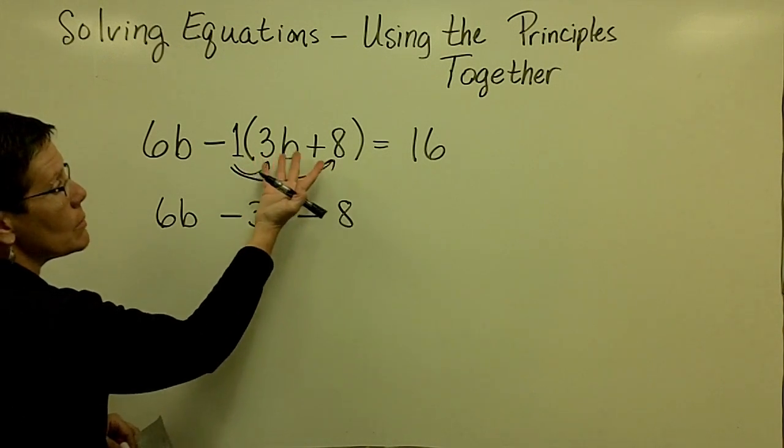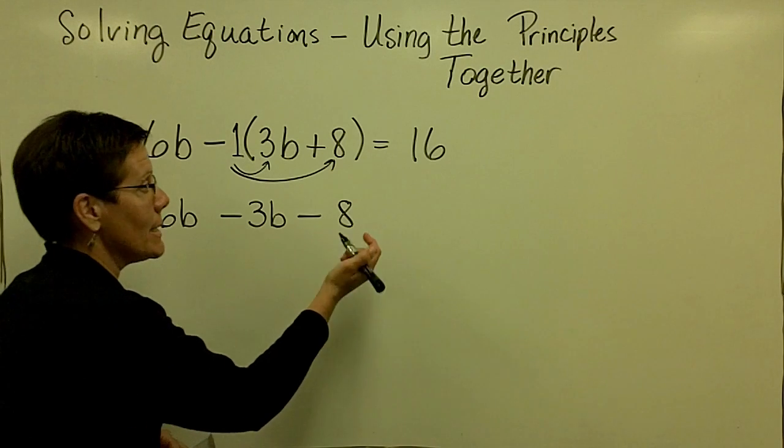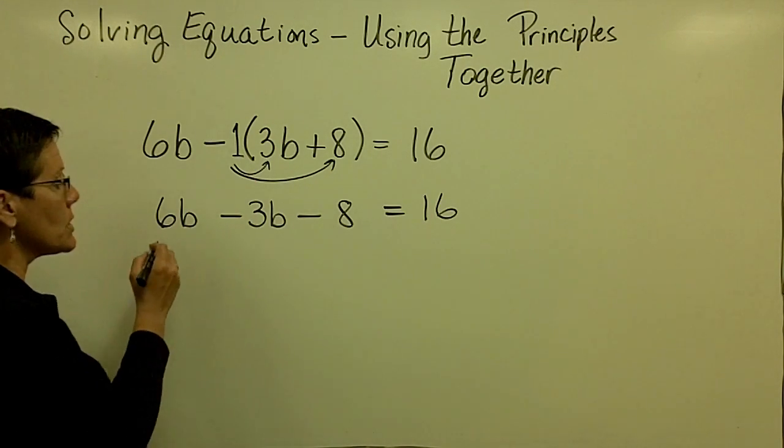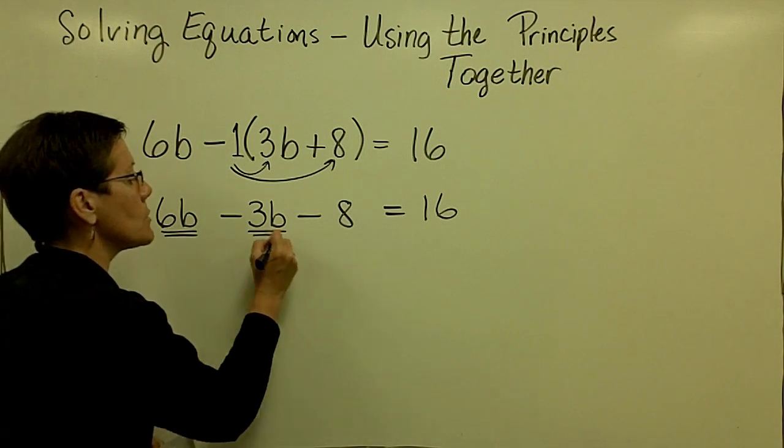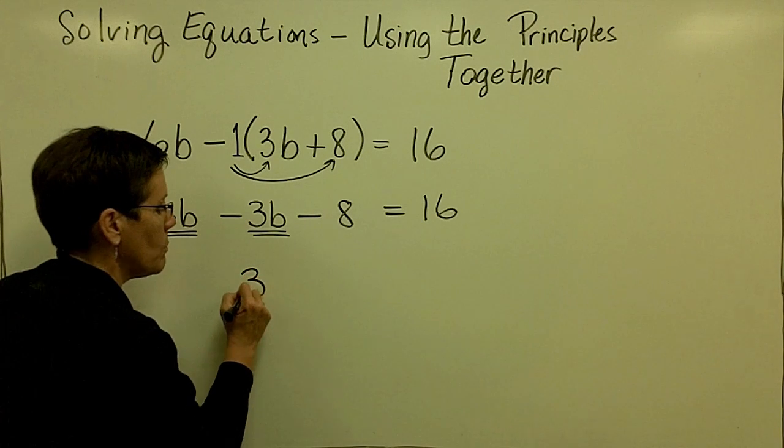So again, please notice it was 3B plus 8, it became a negative 3B minus 8. And because there are three terms on this side of the equation, there must be some like terms. They are right there. 6B minus 3B is 3B.